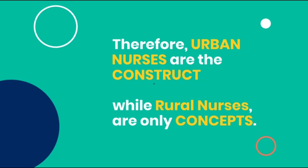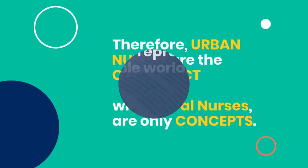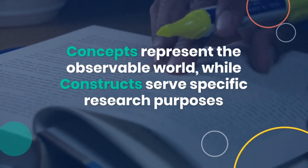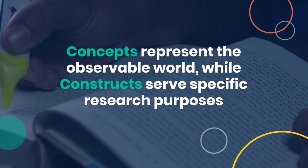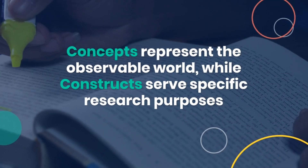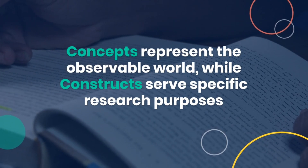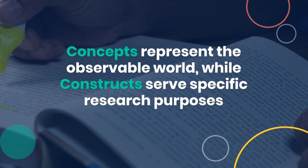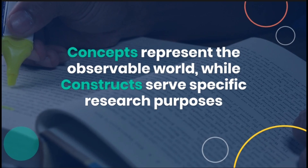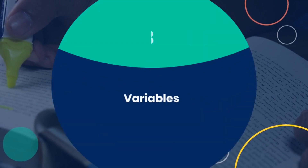Constructs are the ones you are actually going to use, while concepts are those you are no longer going to use. The main difference is: concepts represent the observable world — things you can see — while constructs serve a specific research purpose. You start with your concepts, and whenever you choose a specific concept for a research purpose, it is no longer just a concept but becomes a construct. Please put any questions in the comment section.